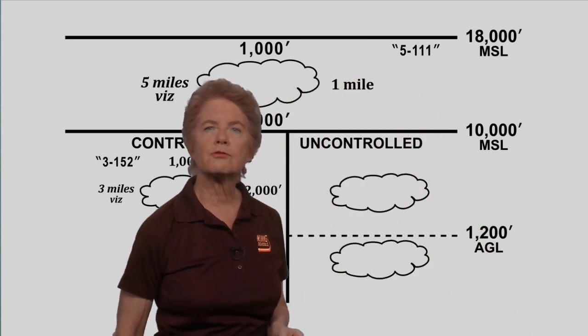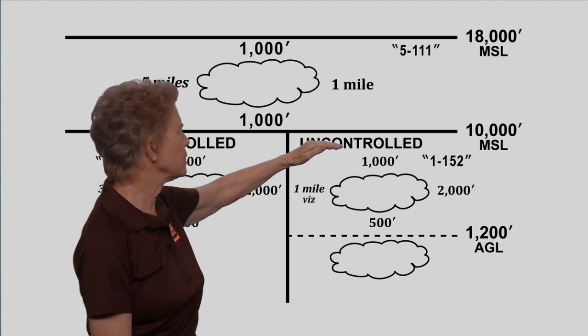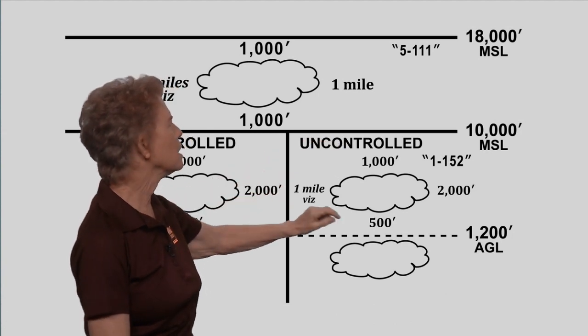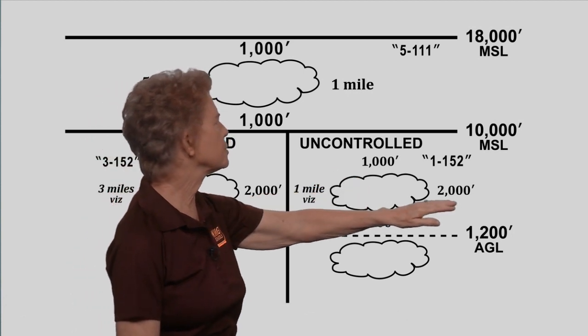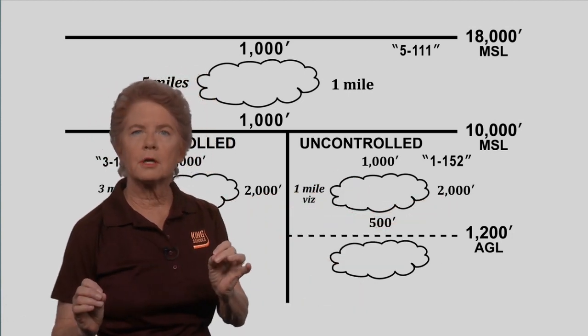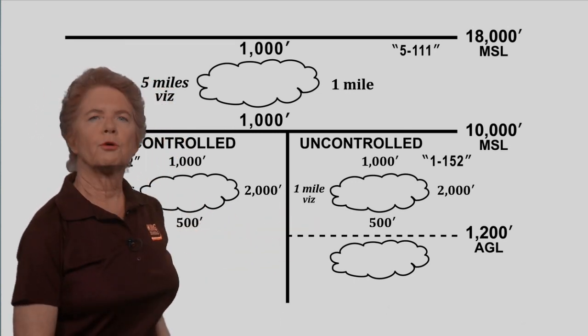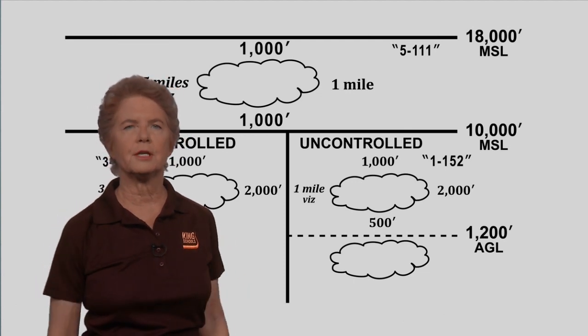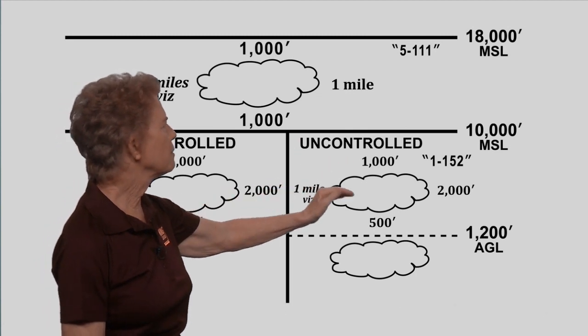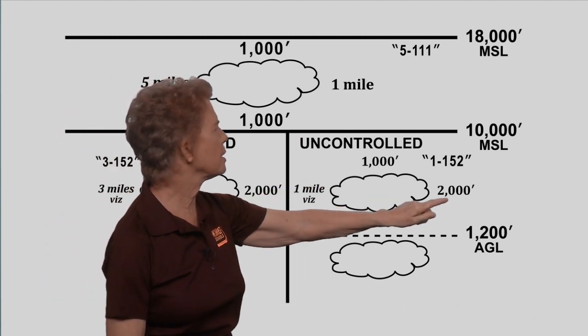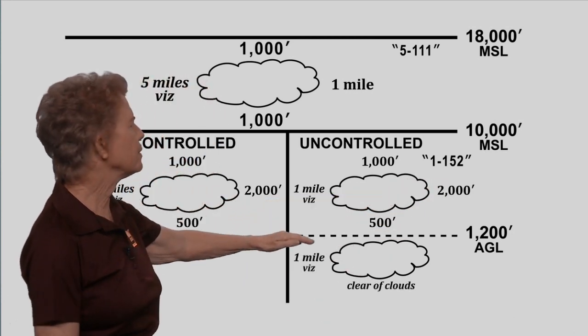In the uncontrolled airspace side, between 1,200 feet AGL and 10,000 feet MSL, it's again 500 feet below, 1,000 feet above, and 2,000 feet horizontally. But now the visibility is only one mile. So think one Cessna 152. One mile visibility, 1,000 feet above, 500 feet below, and 2,000 feet horizontally.